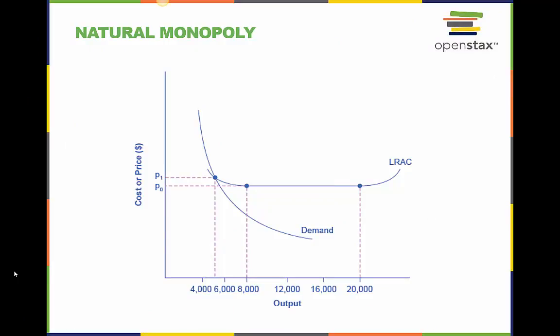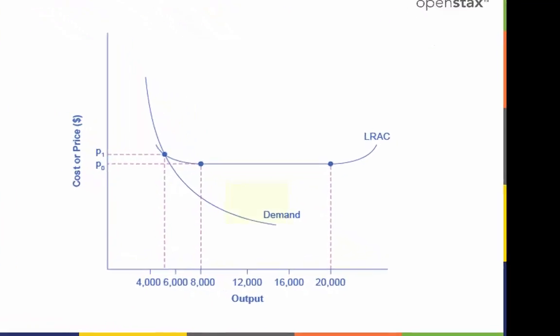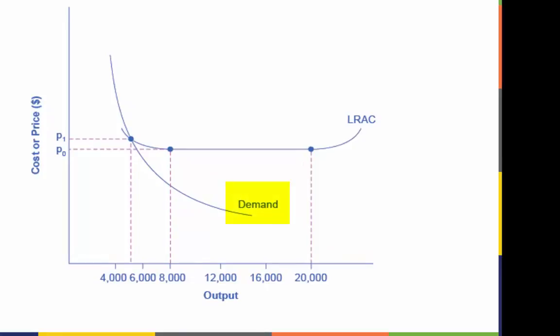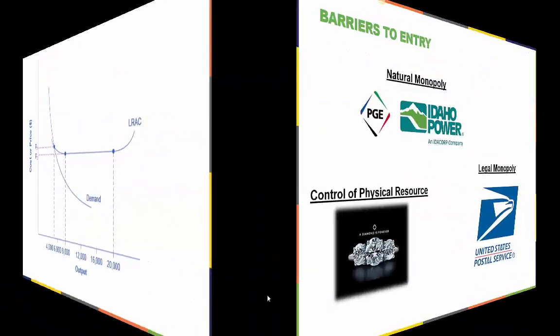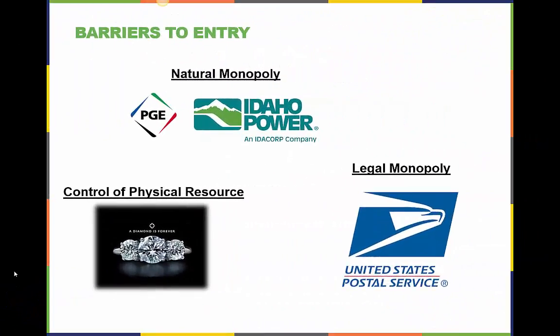A natural monopoly is a term for one way a firm may gain or maintain monopoly power. In this market, the demand curve intersects the long-run average cost curve at its downward-sloping part. A natural monopoly occurs when the quantity demanded is less than the minimum quantity it takes to be at the bottom of the long-run average cost curve. Natural monopoly firms can be found in the energy sector, like these power companies.